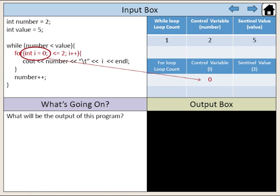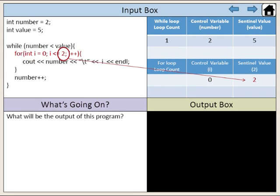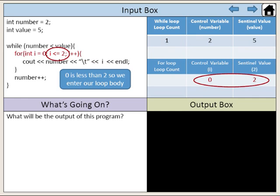We initialize the for loop with the variable i that has an integer data type and a value of 0. Our sentinel value in the for loop is 2. 0 is less than 2, so we enter our loop body.